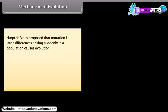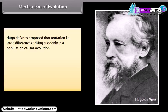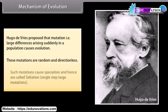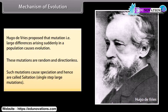Hugo de Vries proposed the mutation theory — that large differences arising suddenly in a population cause evolution. These mutations are random and directionless. Such mutations cause speciation and hence are called saltation, that is, single-step large mutations.